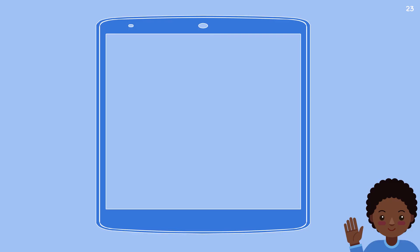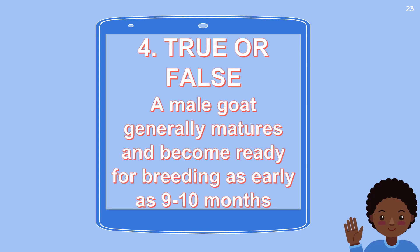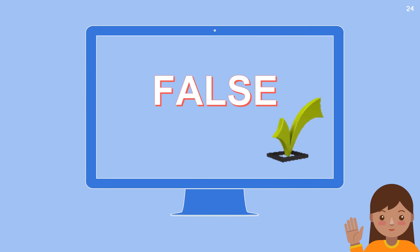Fourth question, true or false: a male goat generally matures and becomes ready for breeding as early as 9 to 10 months. Your 10 seconds starts now. Time is up. The correct answer is false. Again, a buck generally matures and becomes ready for breeding as early as 6 to 8 months.